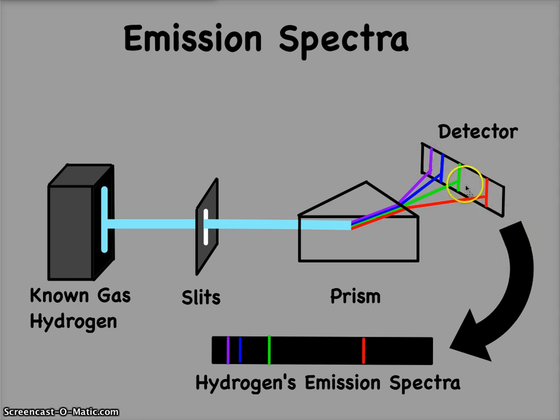We put that on a detector, and we find out that hydrogen's emission spectra, emissions meaning what colors it's sending out, line up against a red, a green, a blue, and a purple.